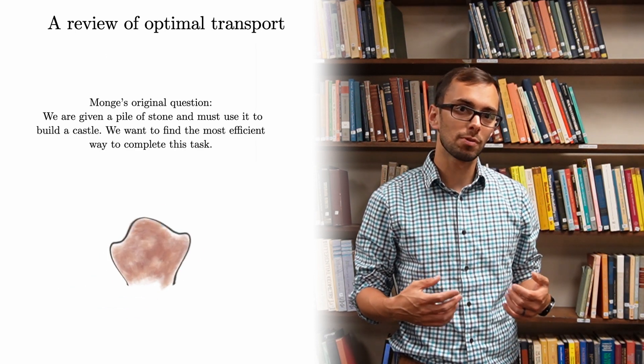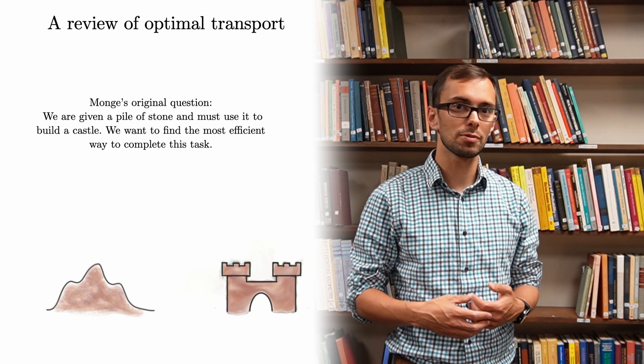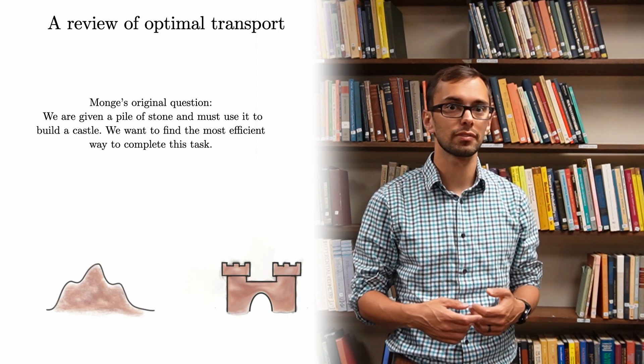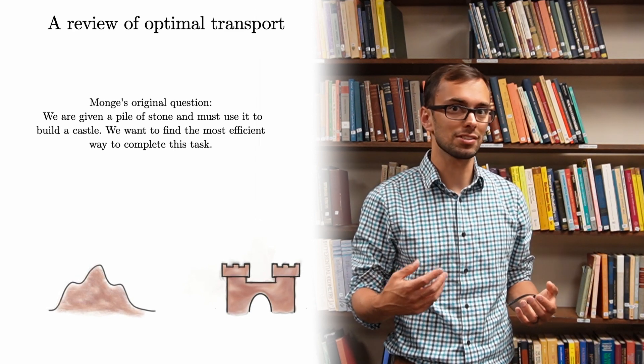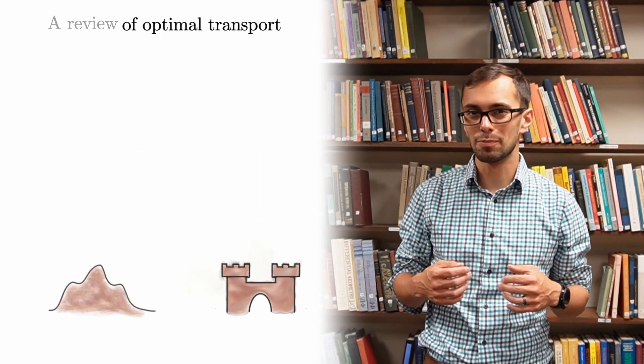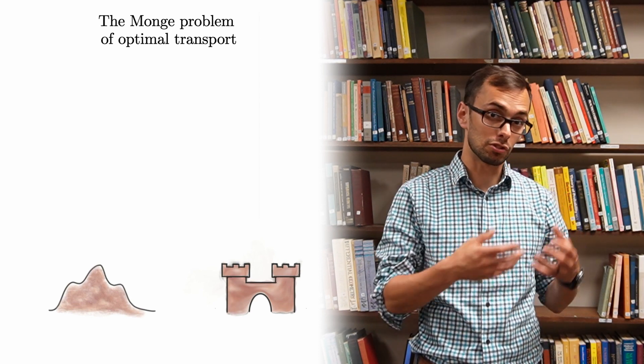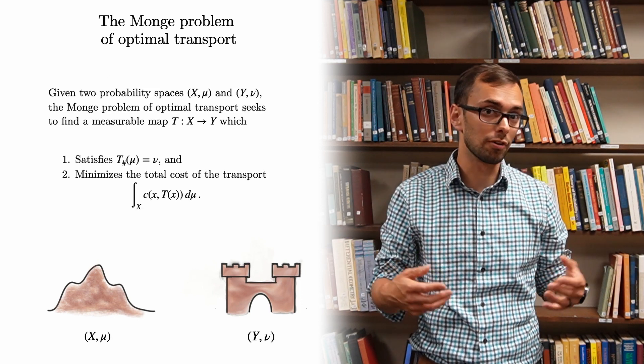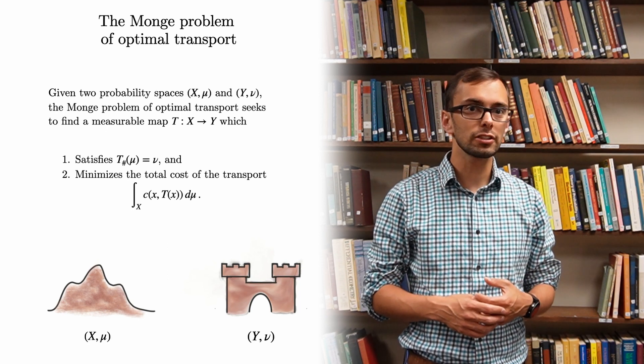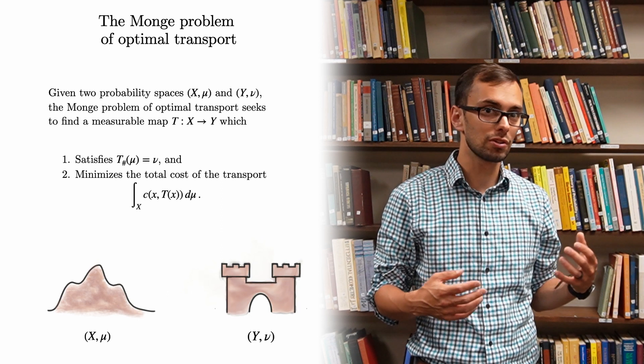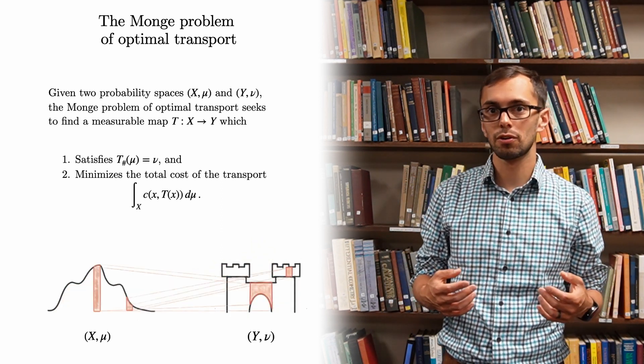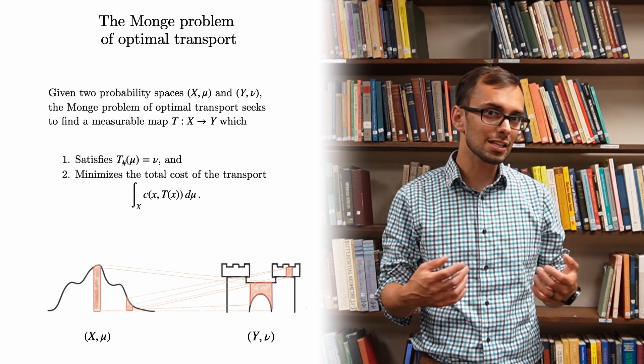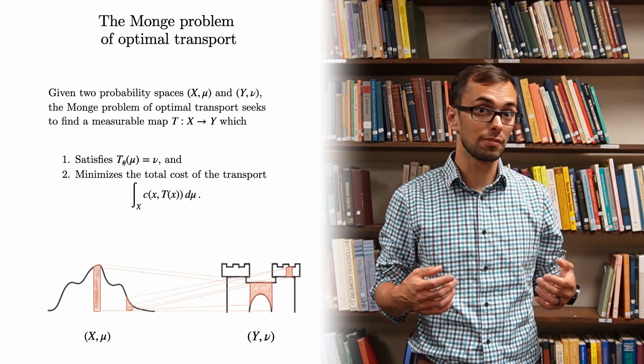Optimal transport was introduced by Gaspard Monge in 1781 as a question about military fortifications. In its original formulation, the central question was the following. We are given a pile of stone and must use it to build a castle. We want to find the most cost-effective way to complete this task. That is to say, we want to transport the material from the quarry to the worksite in a way which minimizes the total amount of work we need to do. In his work, Monge assumed that each part of the stone pile would be sent to a unique part of the castle. In other words, the transport would be induced by a map from the pile to the castle.